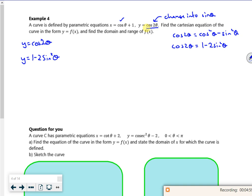So this has become y = 1 - 2sin²θ. Now I'm going to cheat, I'm still going to use sin²θ + cos²θ. But look, this one, if I do some rearranging, so I've got 2sin²θ = 1 - y. So sin²θ = (1-y)/2.